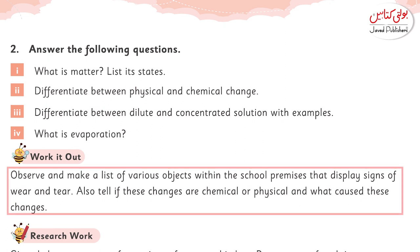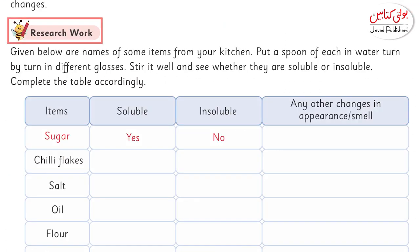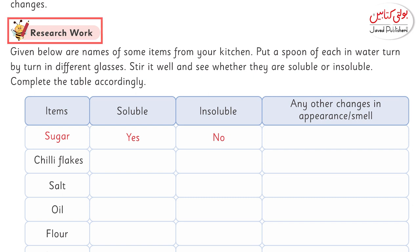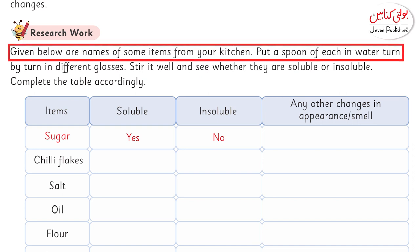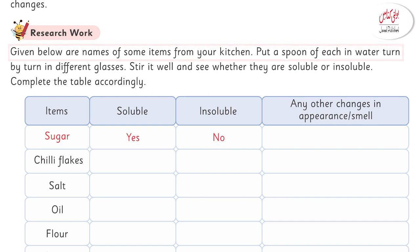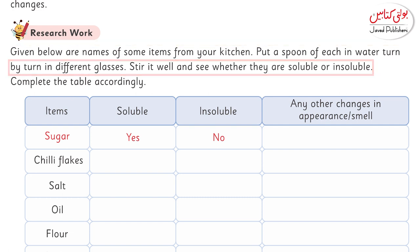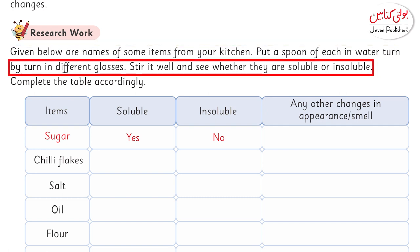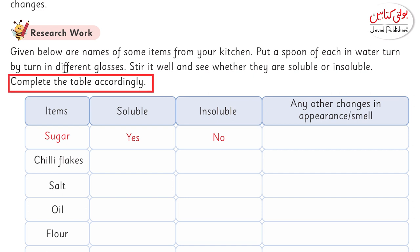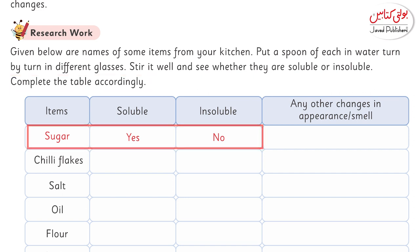Now we have a table. They have given different things that are present in our kitchen and told you what the solubility and insolubility effects are. Put a spoon of each in water, turn by turn in different glasses, stir it well, and see whether they are soluble or insoluble. Complete the table accordingly.